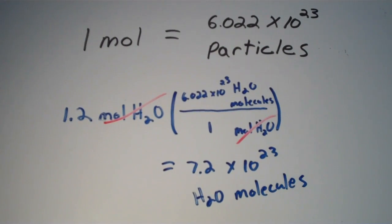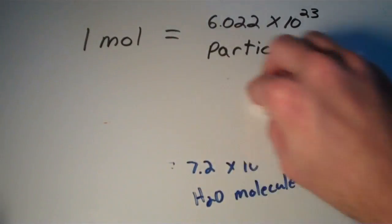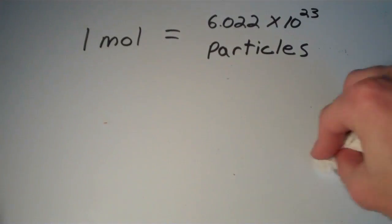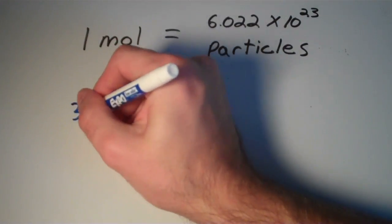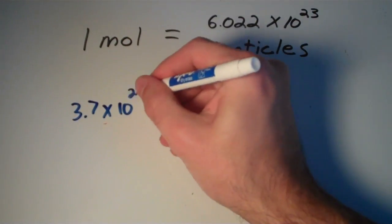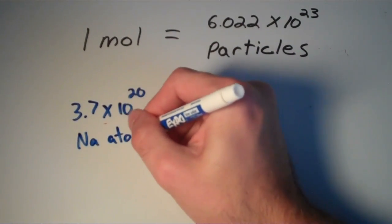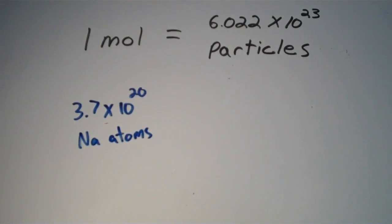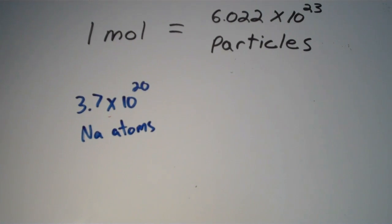Pretty straightforward? I think so. So let's try another one. Suppose we have 3.7 times 10 to the 20th sodium atoms and we want to convert this into moles of sodium.